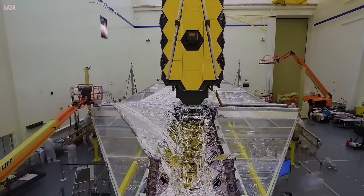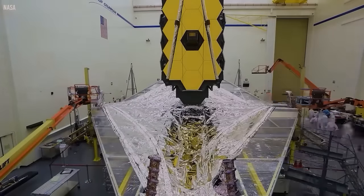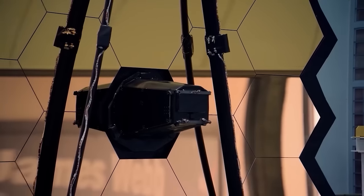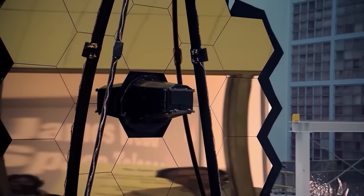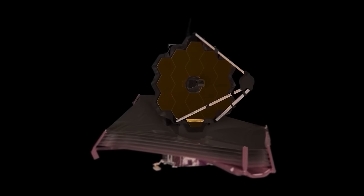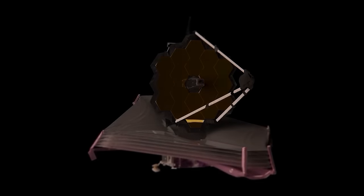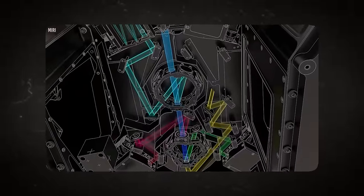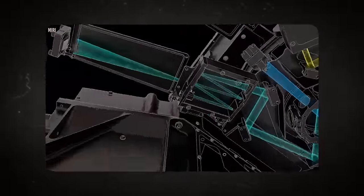Embarking on its voyage on December 25th, 2021, aboard an Ariane 5 rocket from the Guyana Space Center, James Webb undertook a meticulously orchestrated deployment phase. This included unfurling its colossal 6.5-meter primary reflector and positioning in its operational orbit at the Sun-Earth L2 Lagrange point, approximately 1.5 million kilometers from Earth.